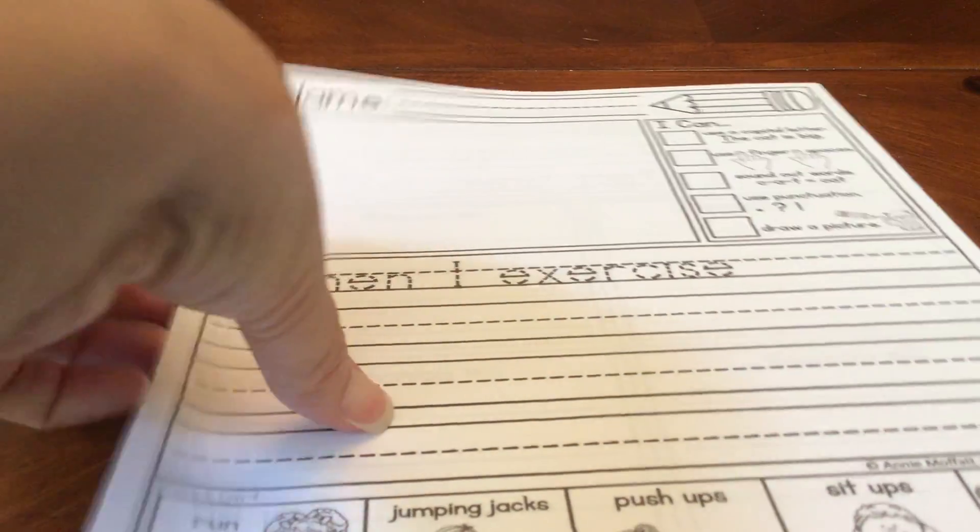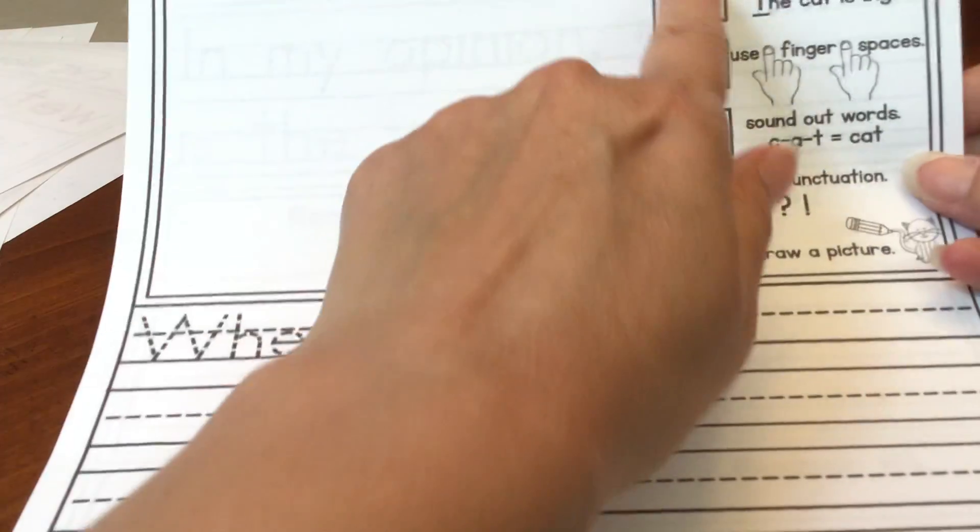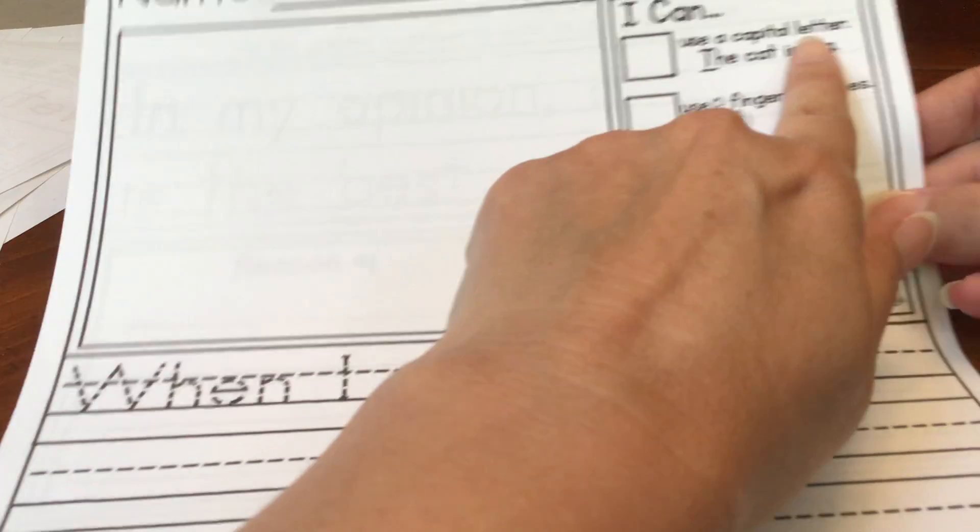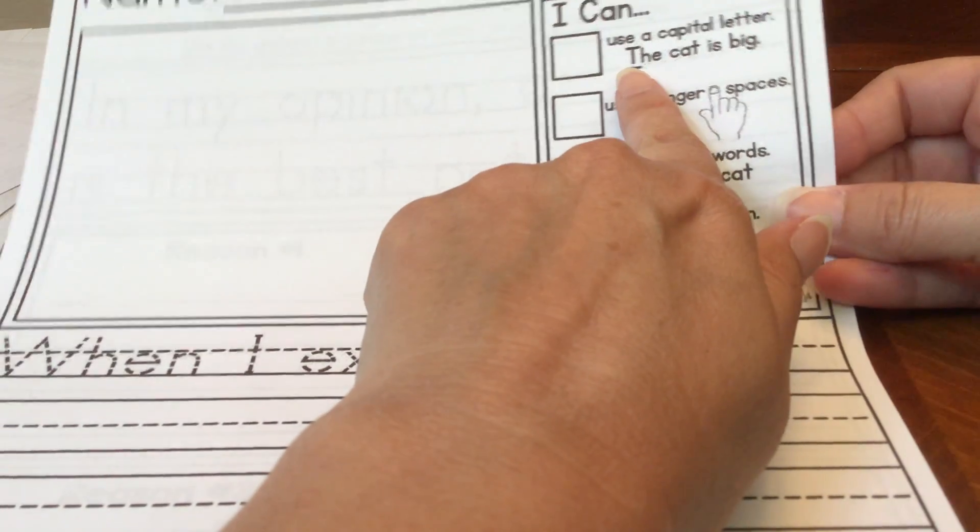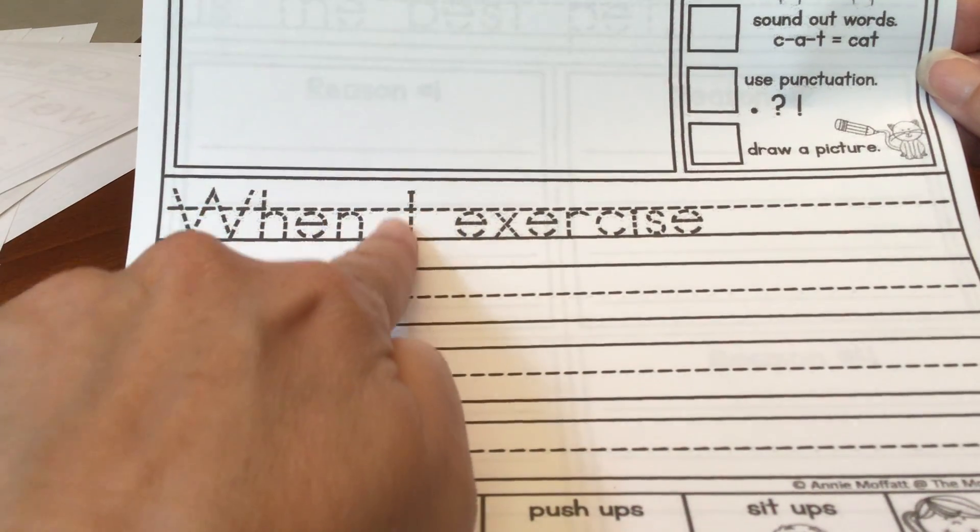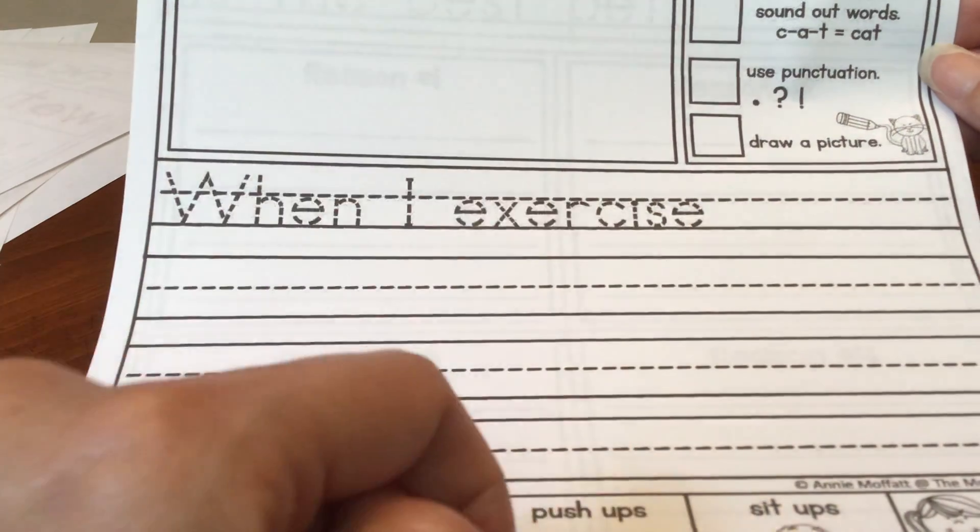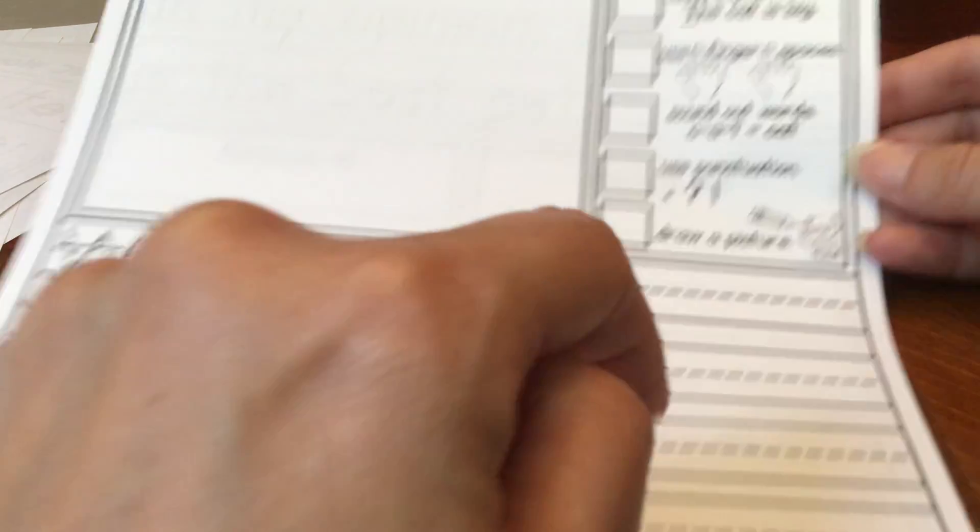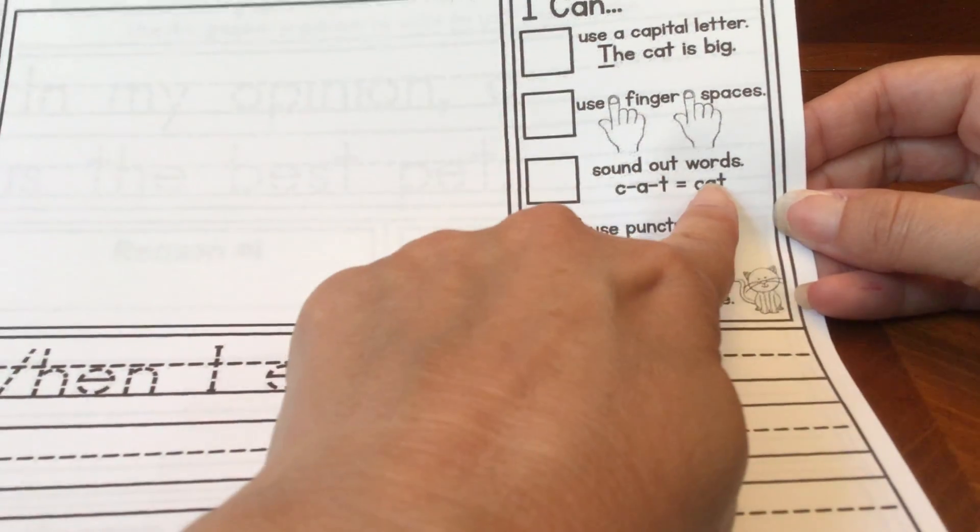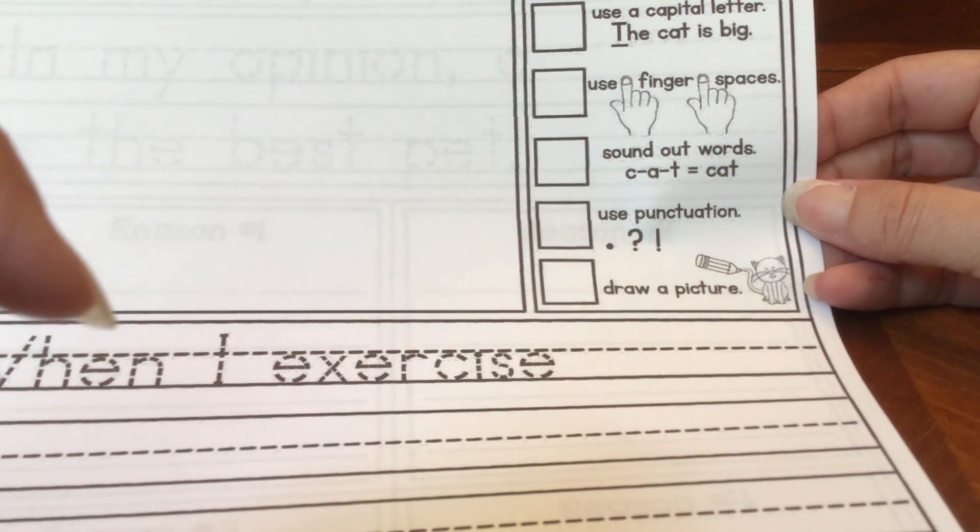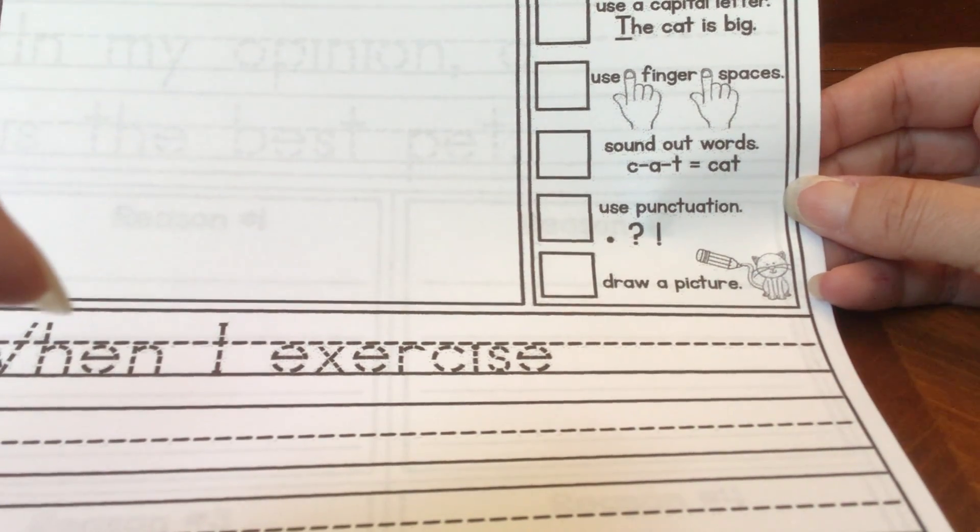All right, writing time. Remember your rules. I can use a capital letter. Start your sentence with a capital letter. I can use finger spaces. When space I space exercise. Leave spaces between your words. I can sound out words. When you want to write something, you've got to make the sounds that you hear and then write those sounds.